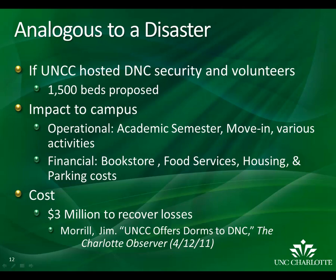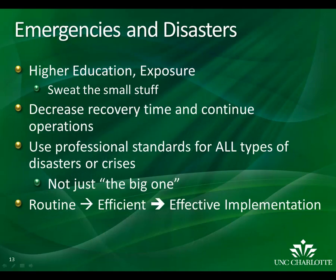Any abnormal disruption of services would be an appropriate time to activate a COOP. If UNC Charlotte had hosted the Democratic National Convention and its personnel, it could have cost the university over $3 million to recover the losses. Here at Institutes of Higher Education, we do sweat the small stuff, but business continuity does not plan for scenario. We plan contingencies in the event of a business disruption. This contrasts with emergency management, which plans for scenarios and prevents further harm to life and property. Departments should be concerned about developing actionable Continuity of Operations Plans for the safety of your staff and the continuity of your department. Practicing the contingency plan steps on a regular basis will familiarize the process and make implementing procedures during a disaster much easier.